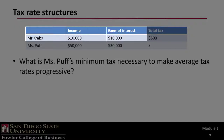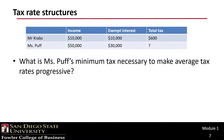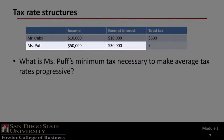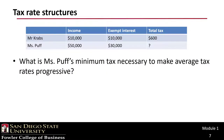Mr. Krabs has taxable income of $10,000 and tax-exempt income of $10,000. Mrs. Puff has taxable income of $50,000 and tax-exempt income of $30,000. If Mr. Krabs' tax is $600, what would Mrs. Puff's minimum tax need to be in order for the tax rate structure to be progressive?